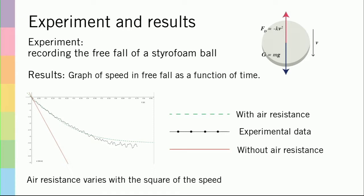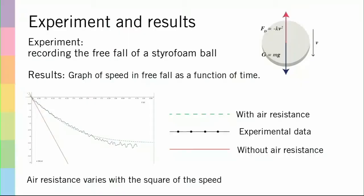I analyzed the film in a computer program. On the screen you can see the graph for the experimental speed of the styrofoam ball I dropped — that's the dotted line. The red line is the speed of an object falling with no air resistance, increasing to infinity. The green dashed line is the theoretical model for speed with quadratic air resistance, meaning drag is proportional to the square of the speed.